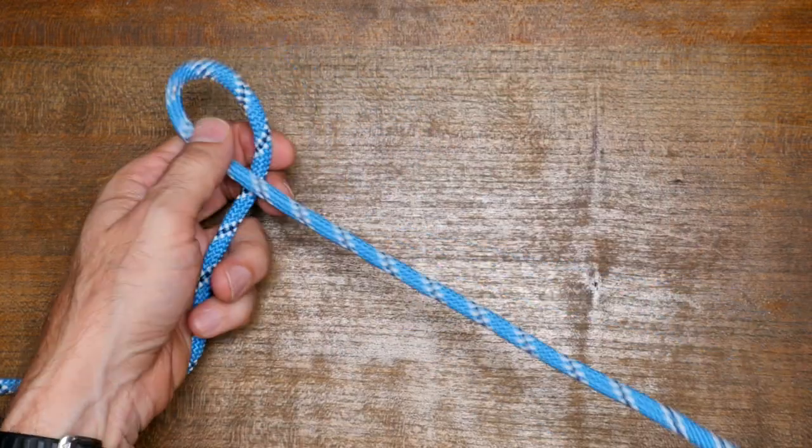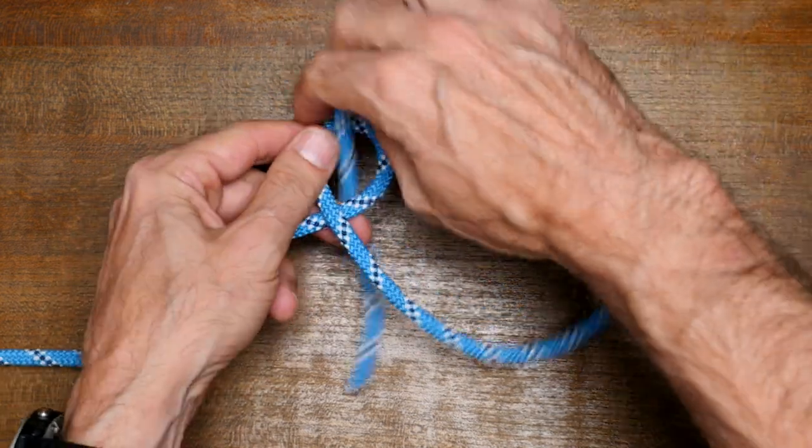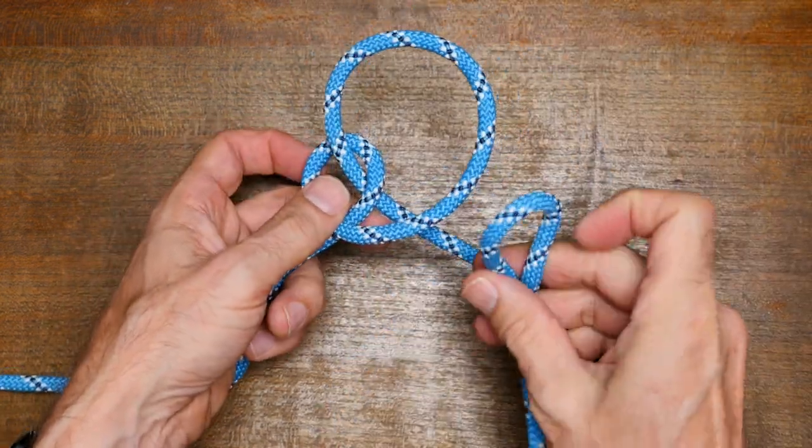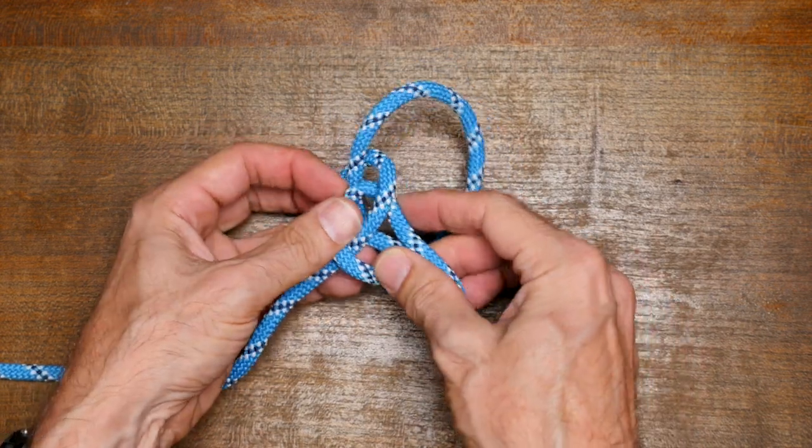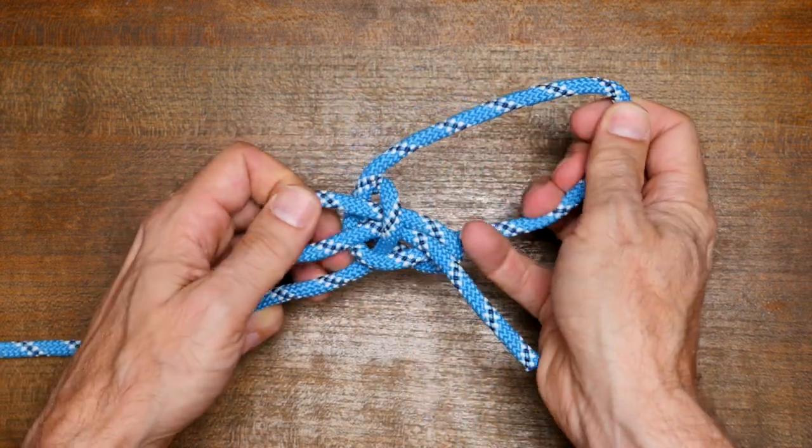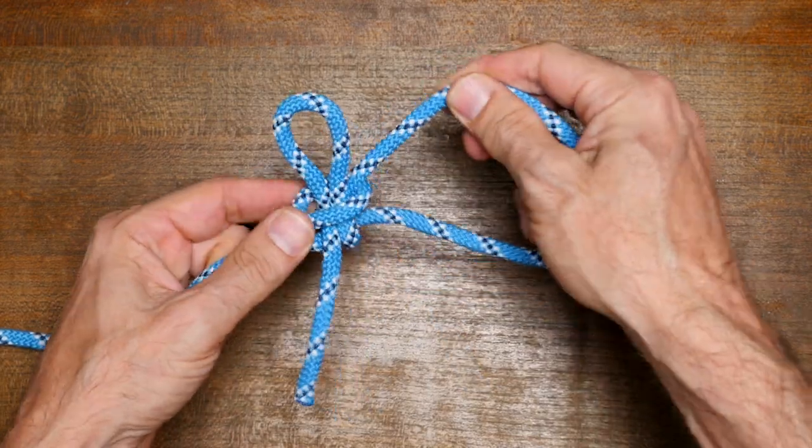To tie the kalmyk loop, first form a small loop, then pass your working end down through the loop. Make a bight and pass the bight over the outer loop and then up through the original small loop, then cinch up the knot.